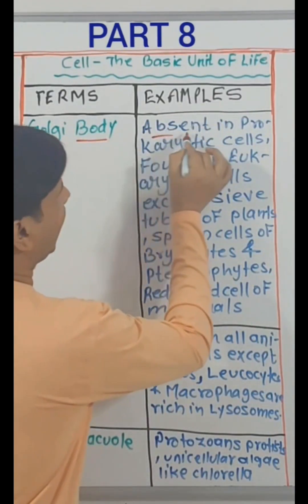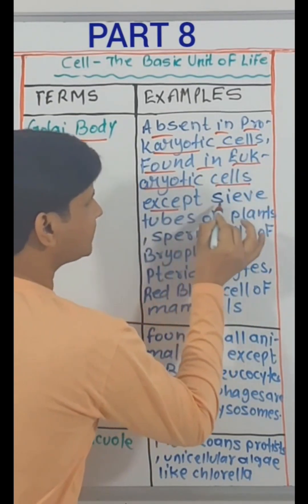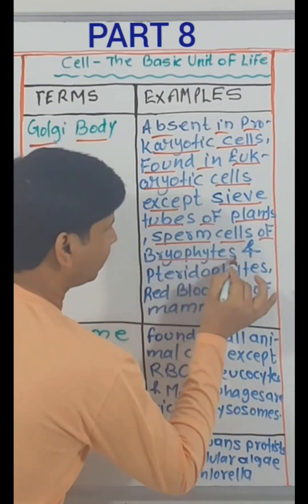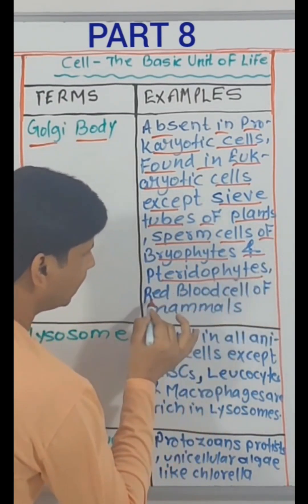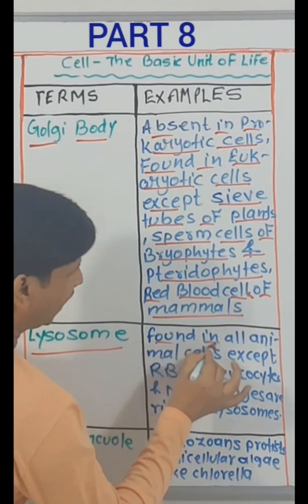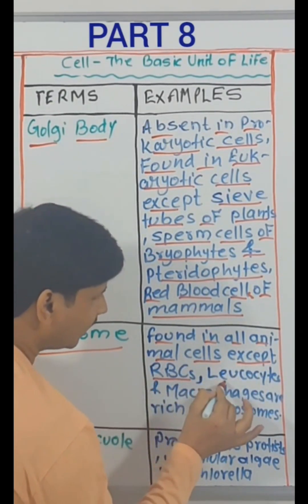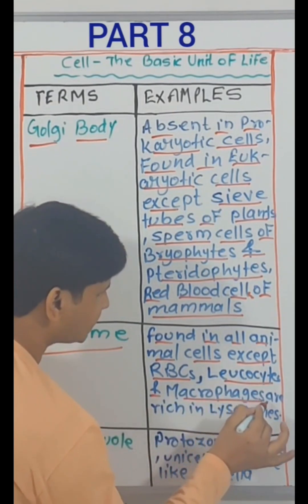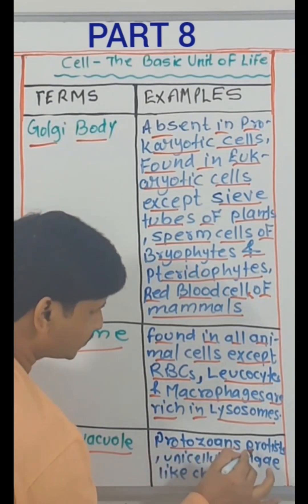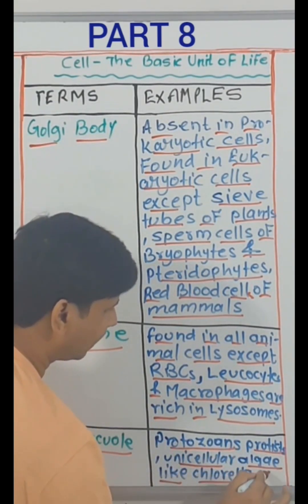Golgi body — absent in prokaryotic cells; found in eukaryotic cells except sieve tubes of plants, sperm cells of bryophytes and pteridophytes, and red blood cells of mammals. Lysosomes — found in all animal cells except RBCs; leukocytes and macrophages are rich in lysosomes. Food vacuole — protozoan protists, unicellular algae like Chlorella, etc.